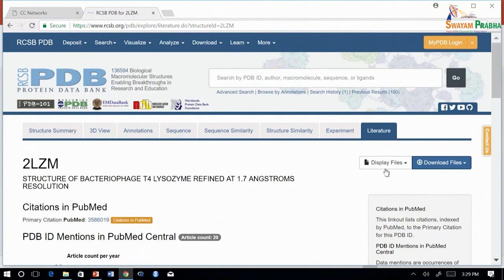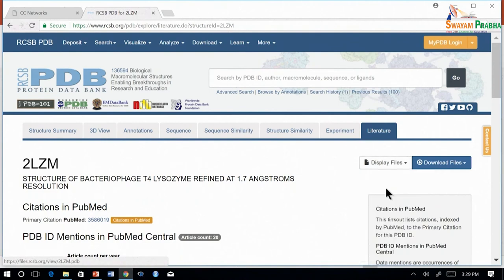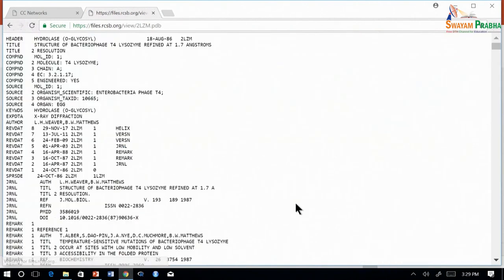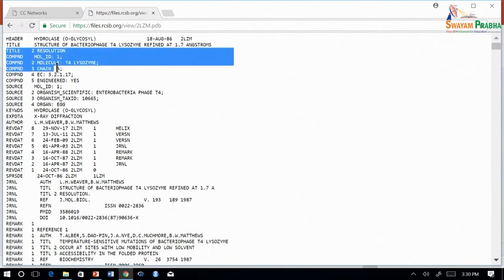Now, how to view the PDB file? If you click here, this display file, you can see the PDB file. Here we have the header information. This gives the title, the date it was deposited, and it also gives the compound details.